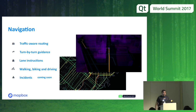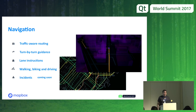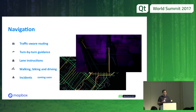Mapbox provides a suite of navigation solutions, including traffic-aware routing and turn-by-turn guidance via the Directions API, plus lane instructions and walking, biking, and driving options. When you make a query to the Directions API, you can specify what kind of routing you need. We're also adding incidents to our core technology — you'll be able to see in real time whether there are any incidents along the way of your route.